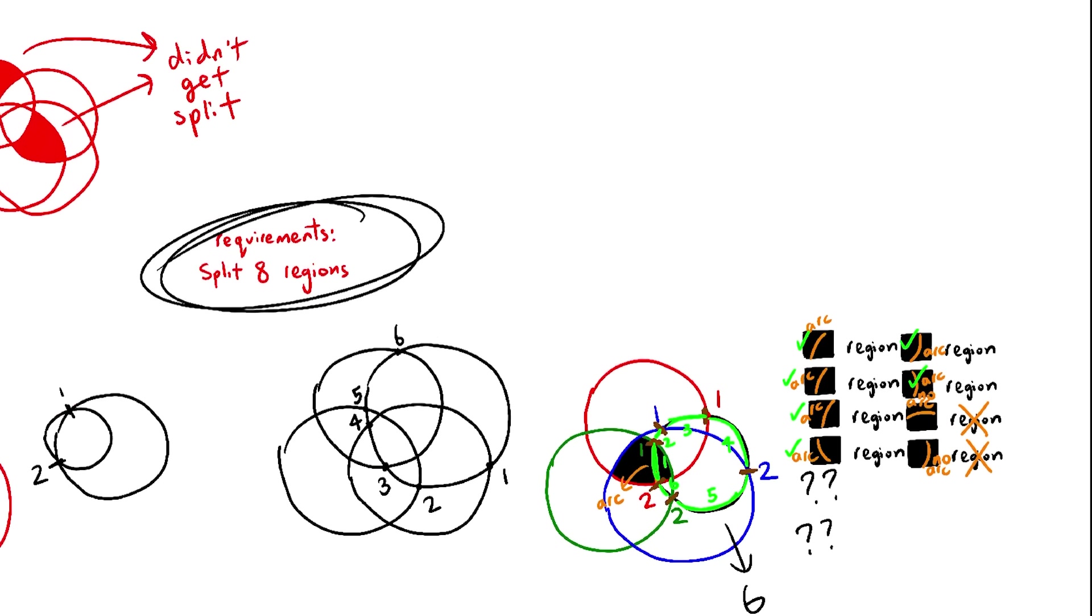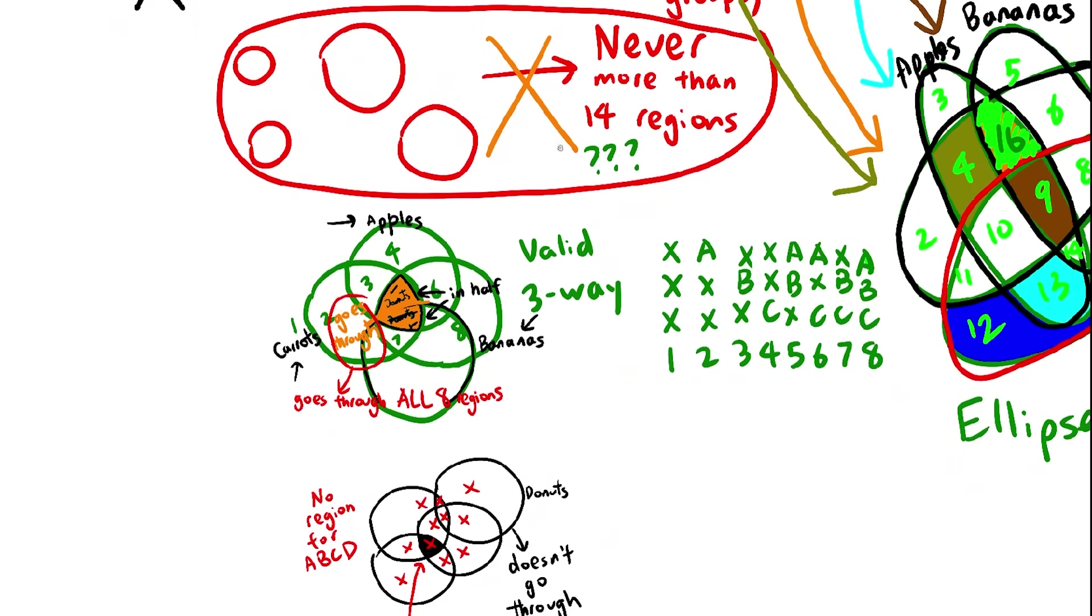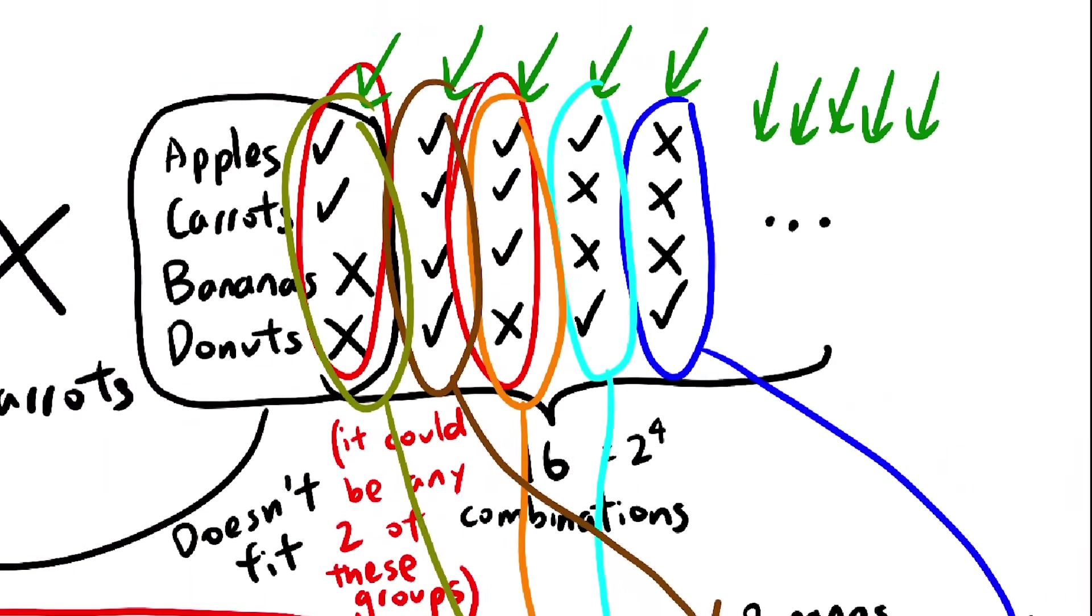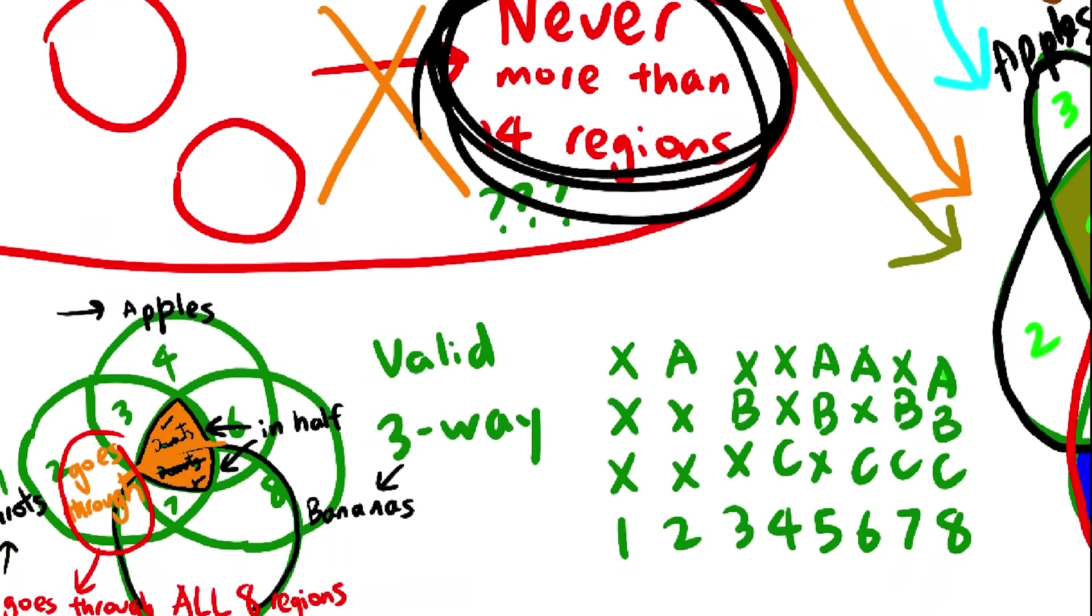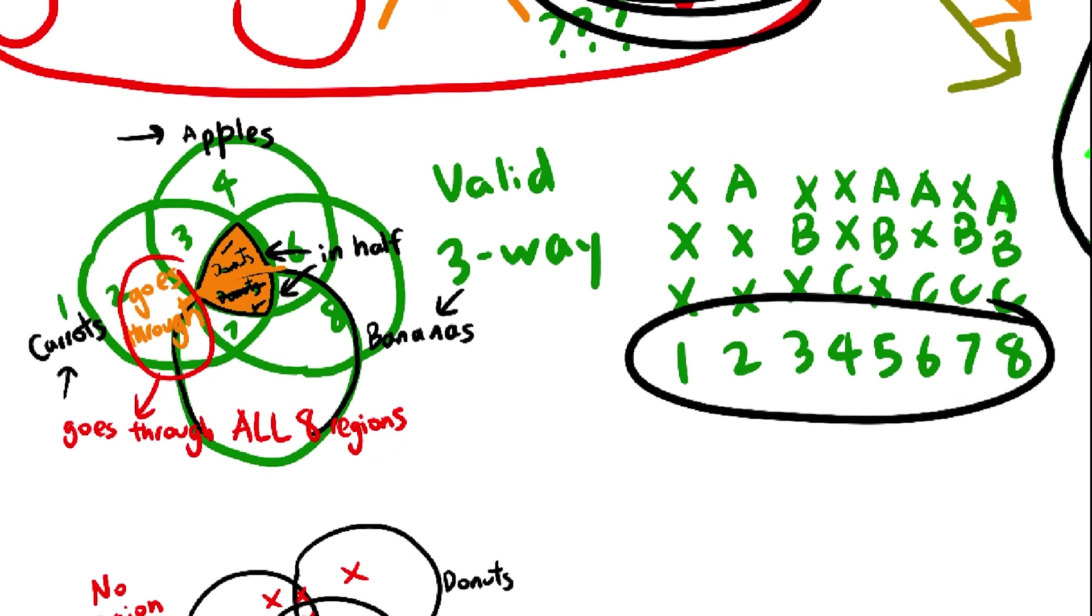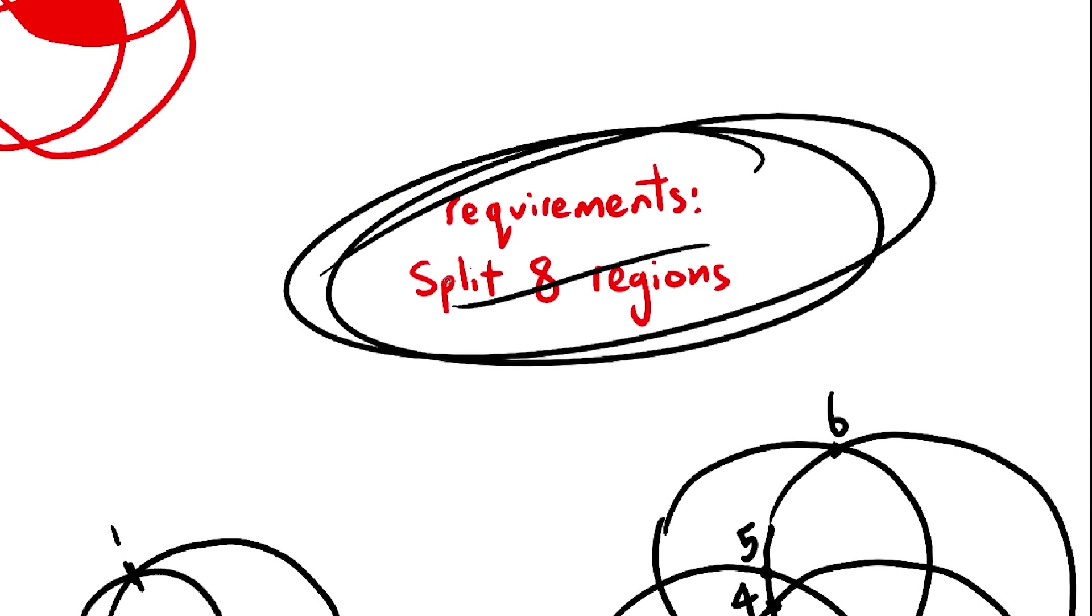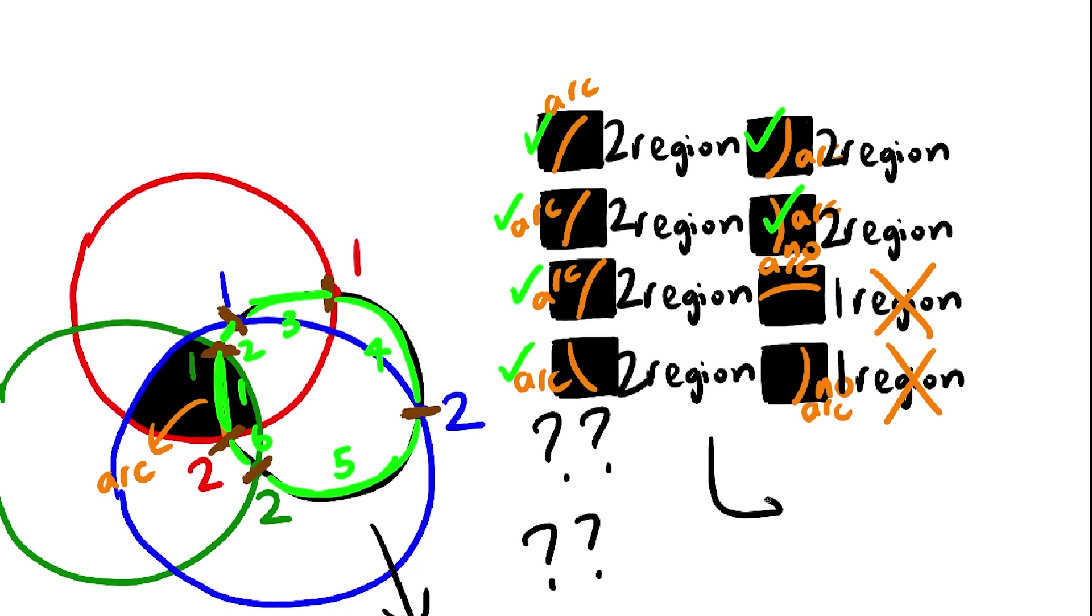That was a pretty long proof, but now we know that 4-way Venn diagrams aren't possible for circles. You need 16 regions to represent 16 combinations, and 16 regions isn't possible. This is because 3-way Venn diagrams have 8 regions, and adding a 4th circle can't split all 8 regions into 16. It can only split 6 of the regions, leading to a maximum of 14 regions in the 4-way Venn diagram. Not enough.